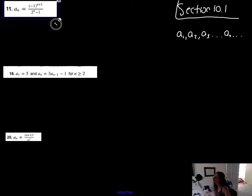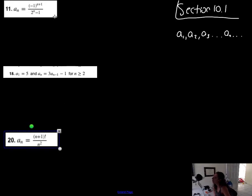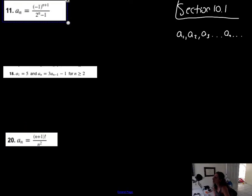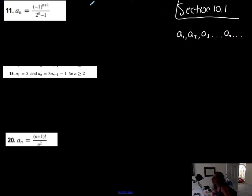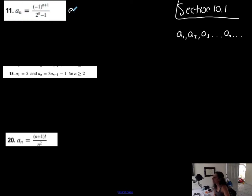So it could be finite, which means it would end at the nth term, or it could be infinite, which means it would continue forever. This is an example of an nth term in terms of a formula, which is an explicit form. So this is an explicit form of a sequence — a formula that represents a sequence.